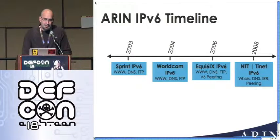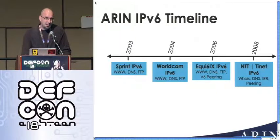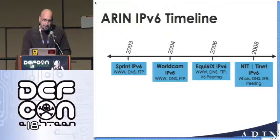Here's the timeline for implementing IPv6 at ARIN. We started really thinking about it in 2002. V6 was finalized and deployed around 1999 — the RFC came out in December '98 and the IAB ratified it in spring of '99. So in a way we were a little behind. We looked at things and wanted to see if this was something we could do.